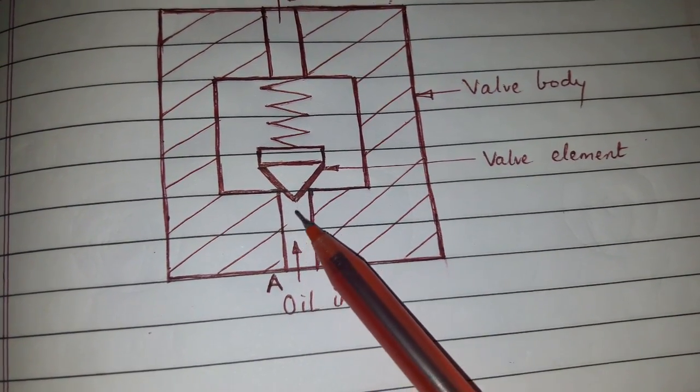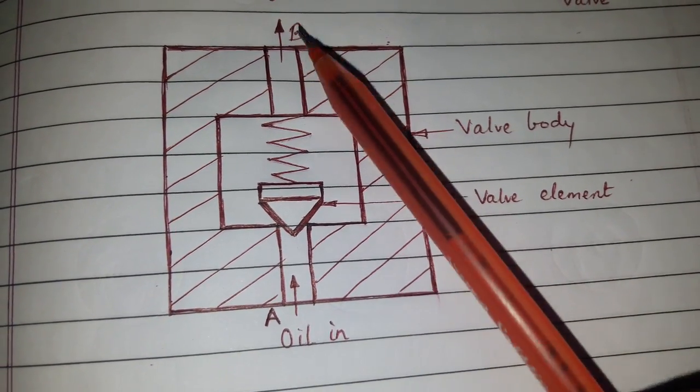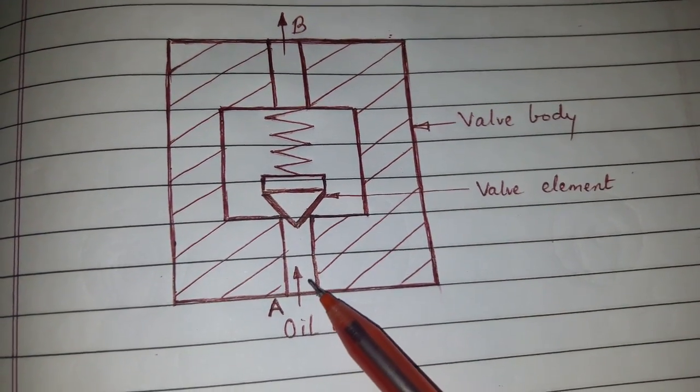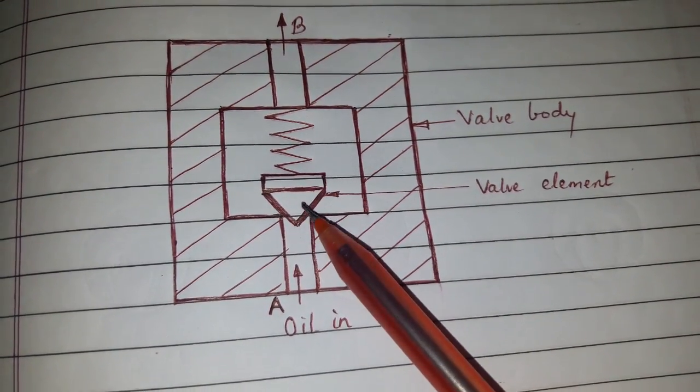When the flow from port A stops, spring will expand and block the flow.